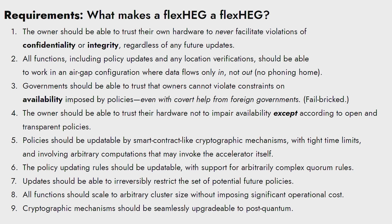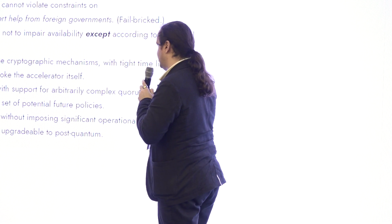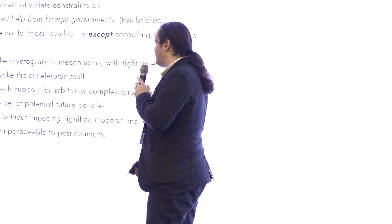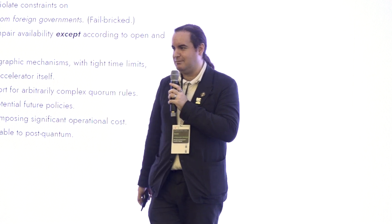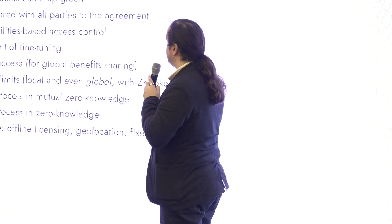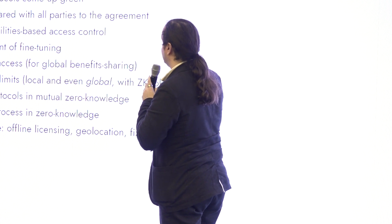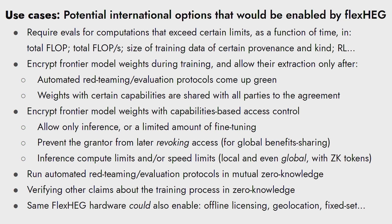The final point: your cryptographic mechanisms — if you have a hardware security module running things at line speed — put in your best hardware accelerator for a post-quantum system, because you might need that before the hardware lifetime is up. This enables things like requiring evals for computations that exceed certain limits or involve RL or training data with biological sequences. You don't want people to be able to run big computations with certain properties without conforming to a shape that includes certain evals.